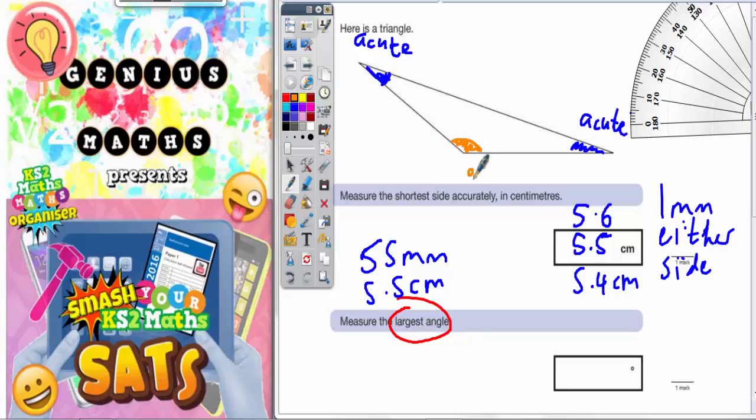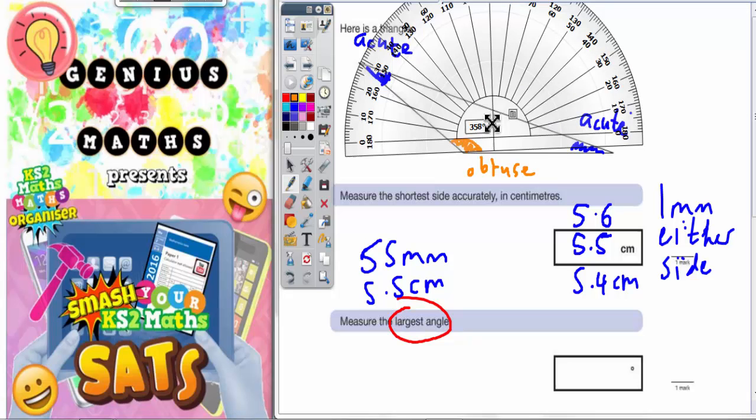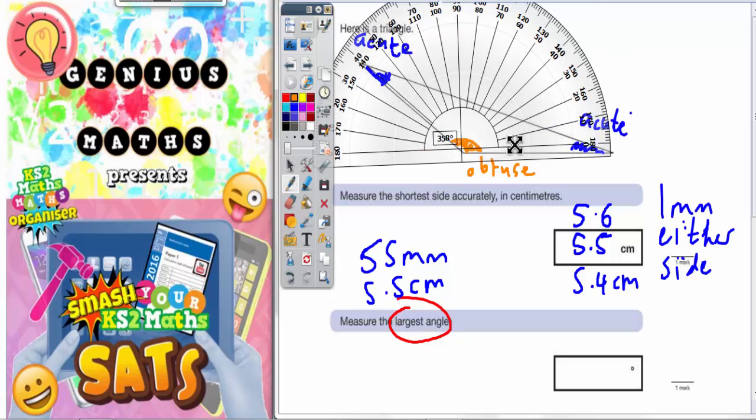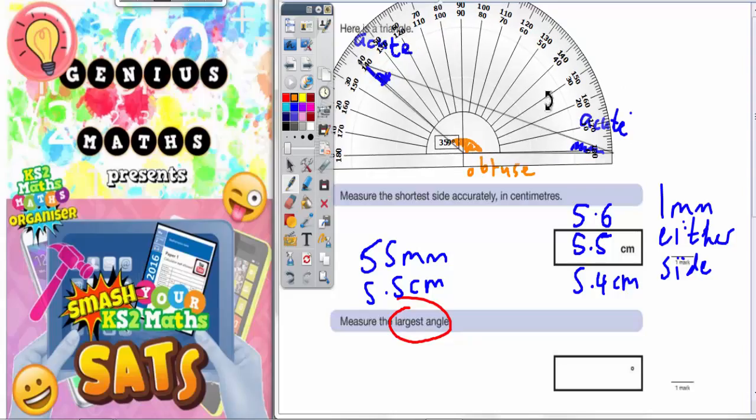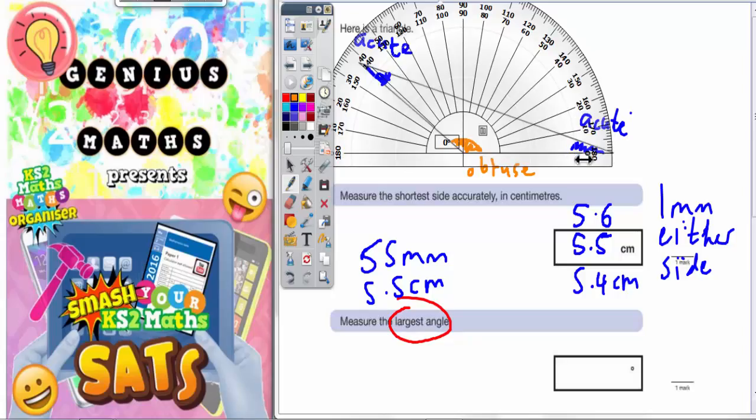And this angle that's left is obviously an obtuse angle. So that's the angle we're measuring, and that's obtuse. You get your angle measure, you make sure the center of the angle measure is right in the corner of the angle like so, and you make sure that zero is pointing along one of the lines. You can see that zero there pointing along this line.